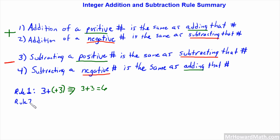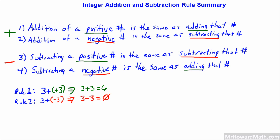Rule 2 example: Addition of a negative number is the same as subtracting that number. We'll stay with threes — three plus negative three is the same as three minus three, which equals zero. Notice that adding this negative number basically became the same as subtracting.